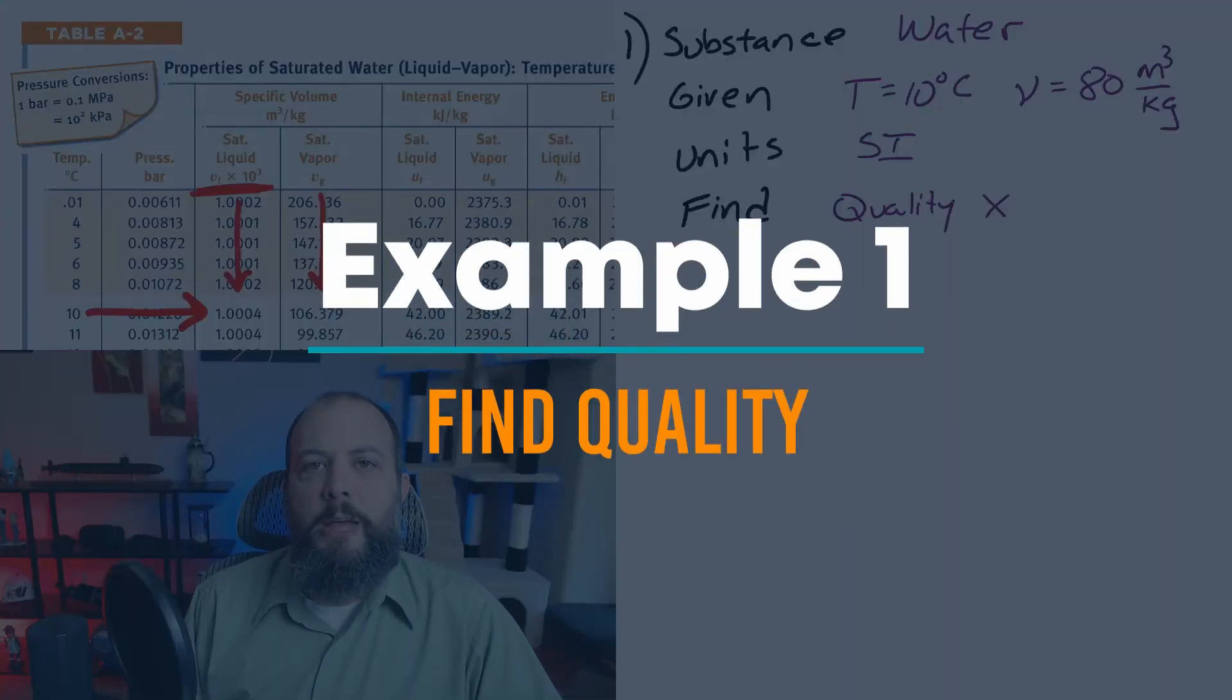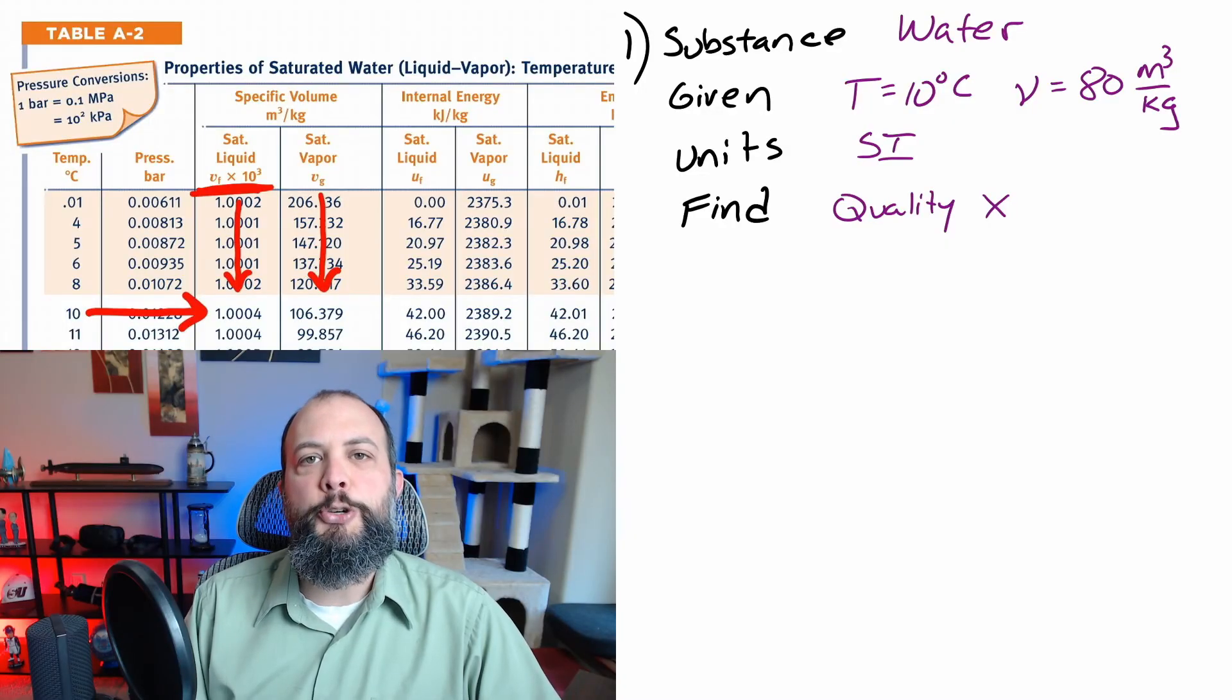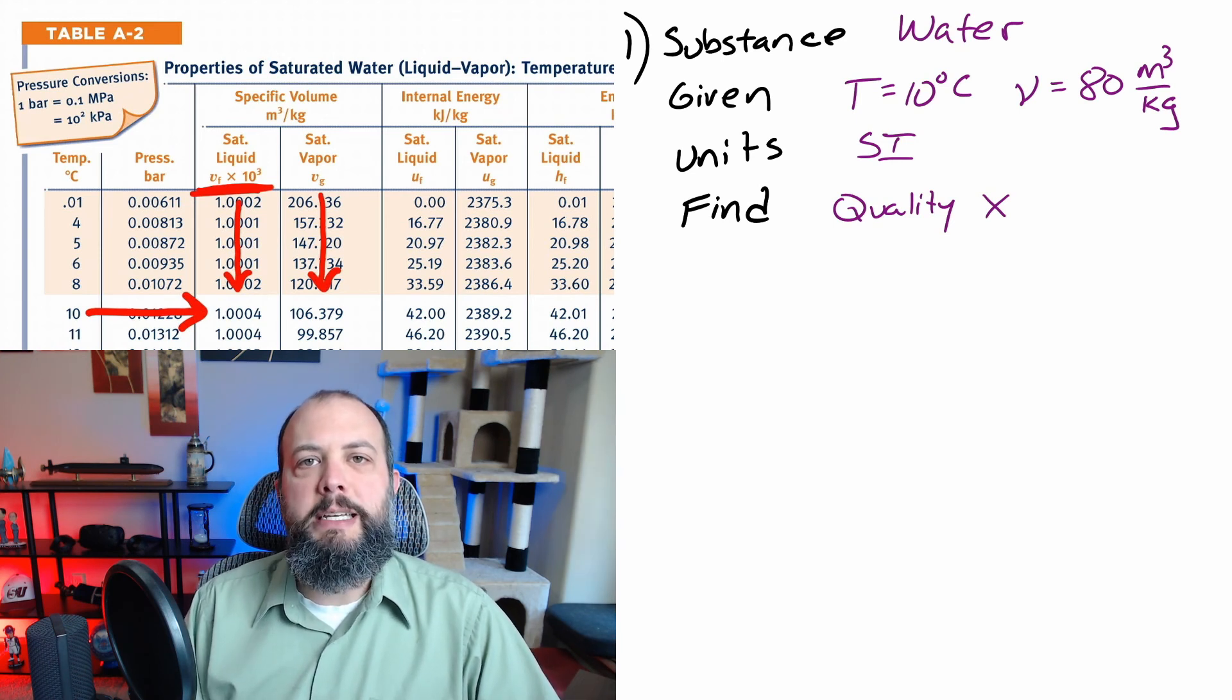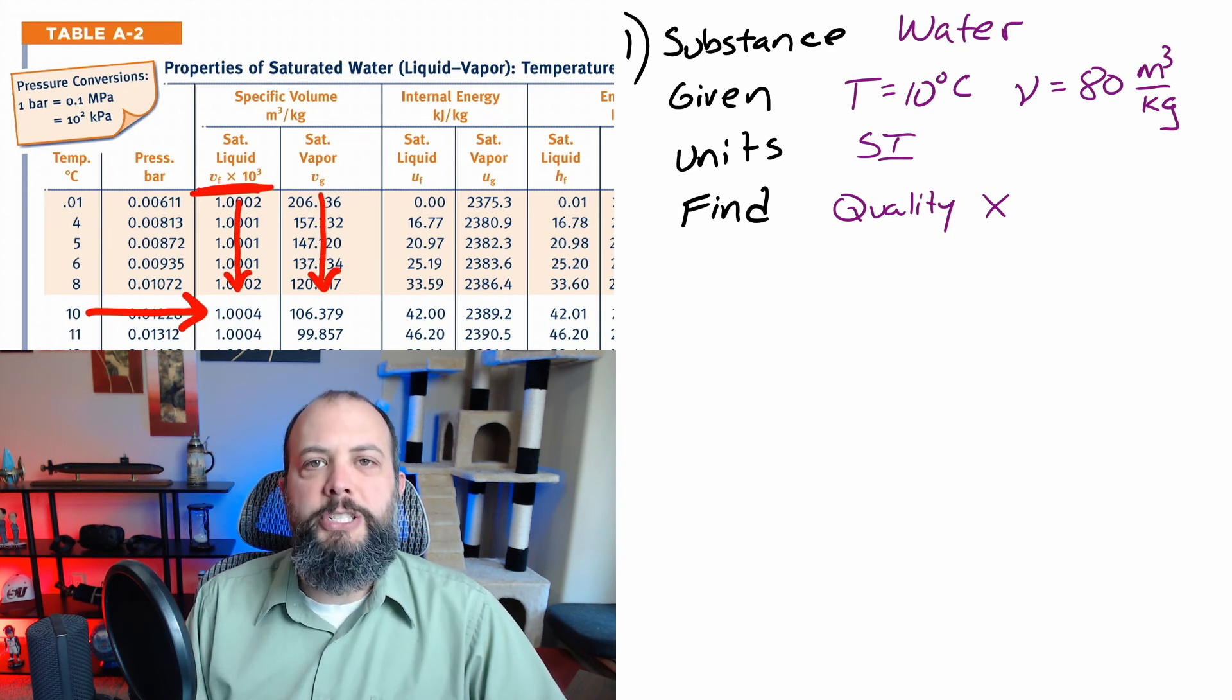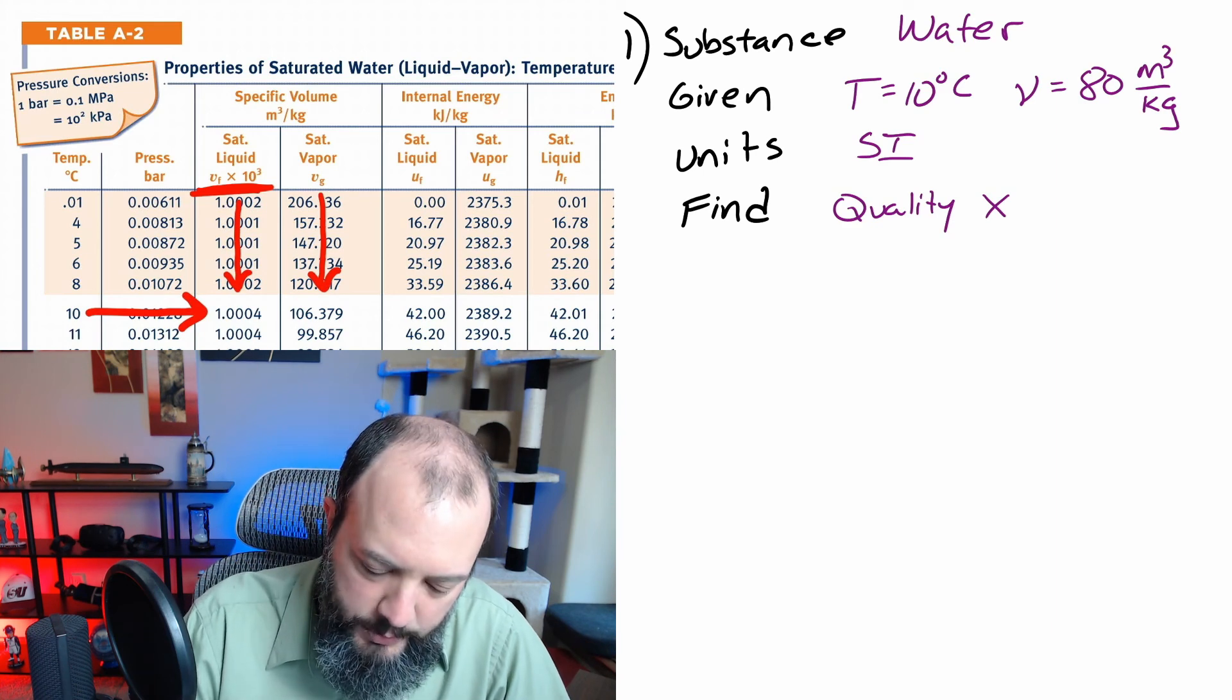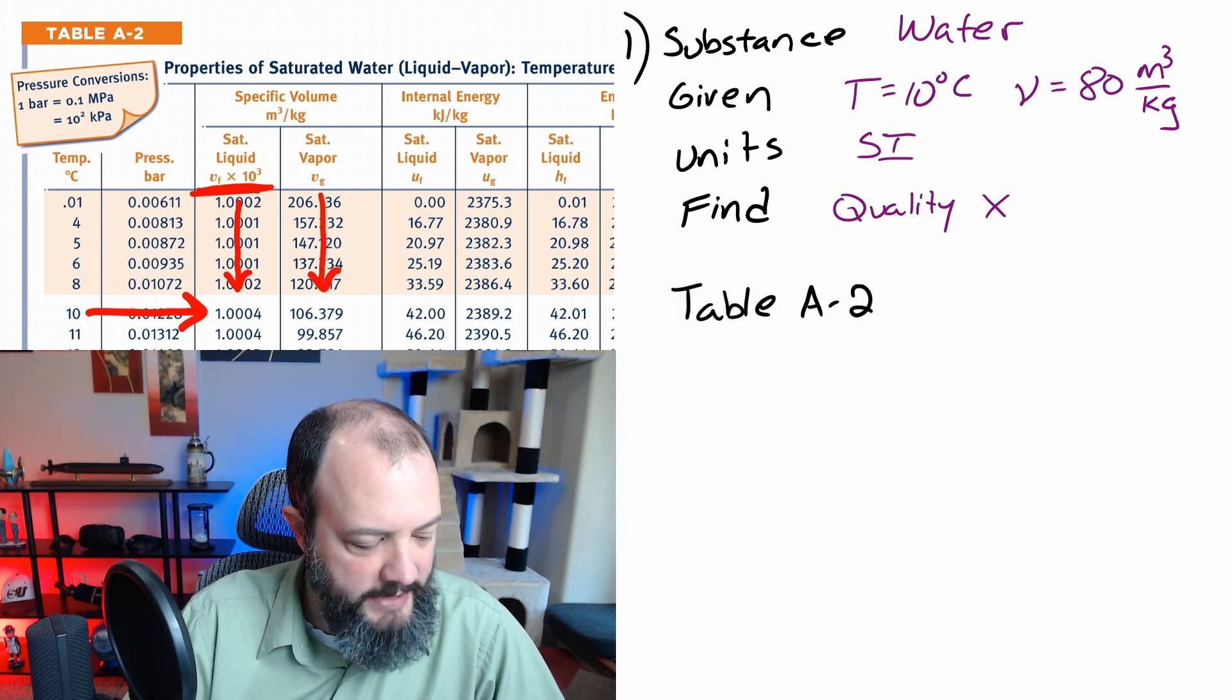Your first step will always be to identify which table you need to use since there's about 25 tables in the back of the book but they're each duplicated for a different set of units. So in this problem we're in the SI units so make sure you go to the SI tables. The substance is water so that narrows it down to the first few tables and since you're asked to find a quality that tells you that you're going to need the saturated water table because quality is only relevant for a liquid vapor mixture. So we're going to use the temperature table not the pressure table. So this is why we're using table A-2 and table A-2 has temperature listed on the left-hand column.